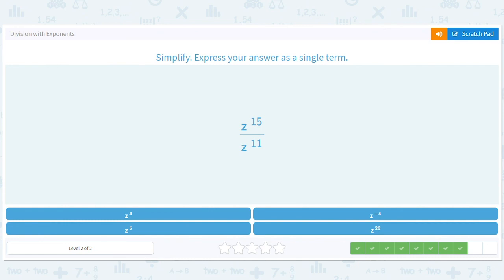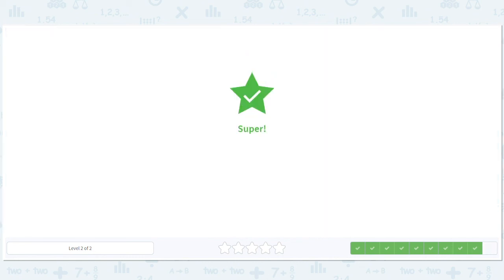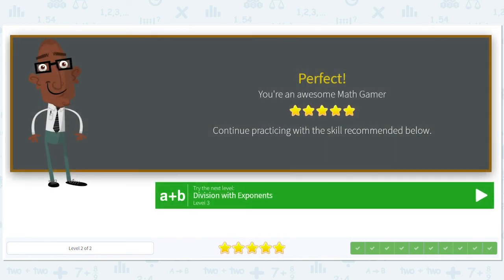15 minus 11 is 4 so we have z to the fourth. And i to the 16th over i to the sixth, 16 minus 6 is 10 so we have i to the 10th. And let's see what we have at level 3.